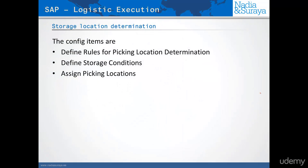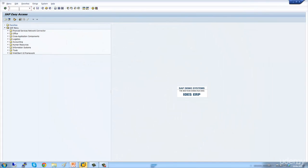Now let's look at the three configuration items needed to determine the storage location. First, we need to define and assign the rules — i.e., which fields we use to determine the storage location. We then have to define the storage condition. And finally, we would have to assign the picking location.